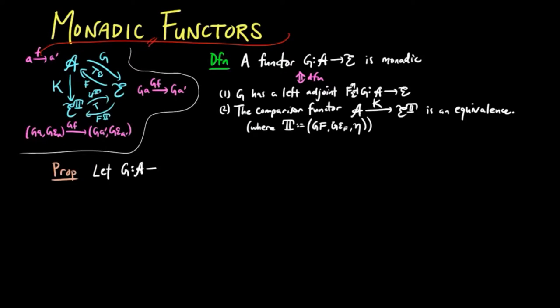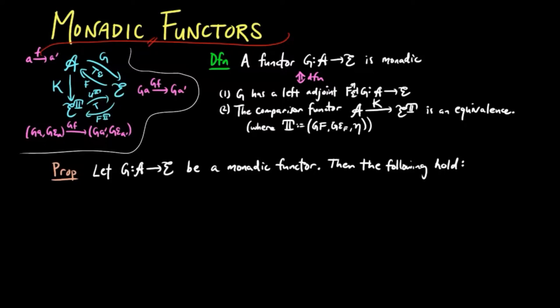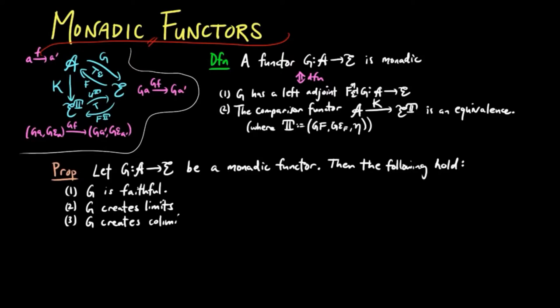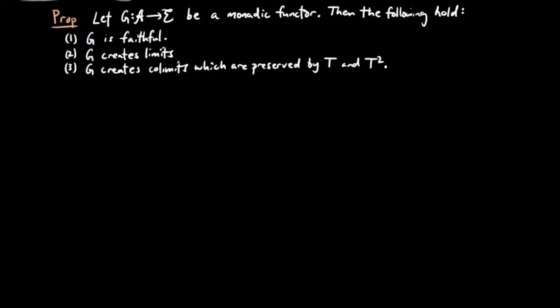We let G be a monadic functor; then the following conditions hold. (1) G is faithful. (2) G creates limits. And (3) G creates colimits which are preserved by T and T².